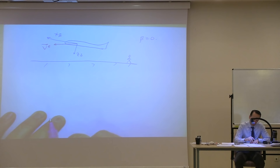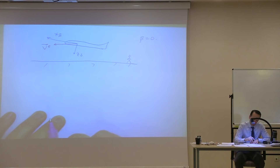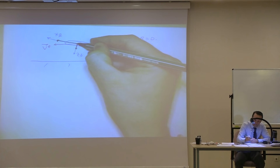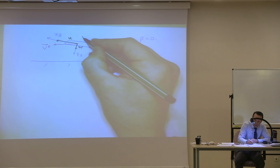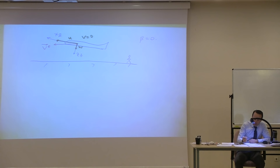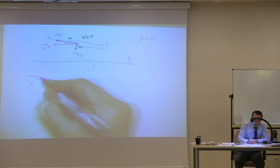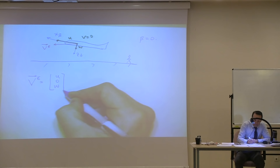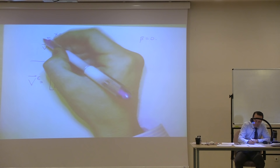This velocity has two components: one is U and one is W, and V is equal to zero because beta is equal to zero. So you have U, zero, and W. And this angle here is your alpha — that's your angle of attack.